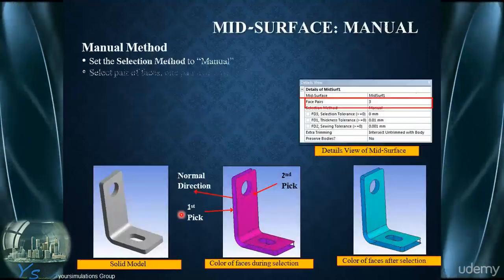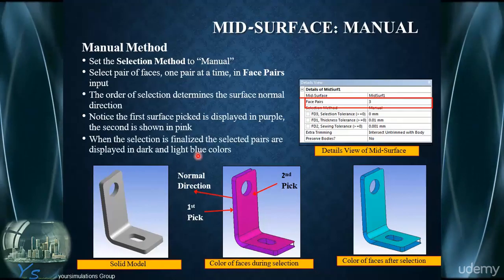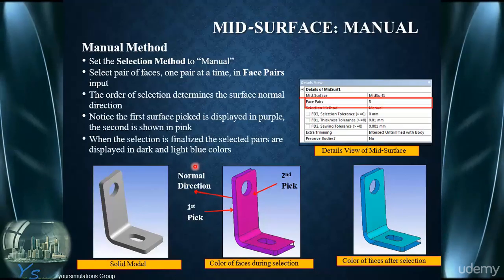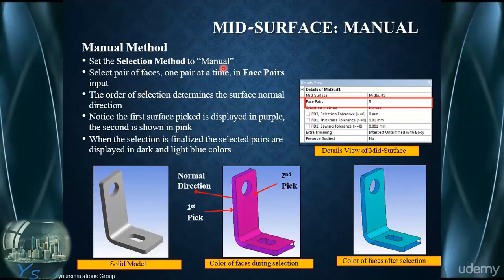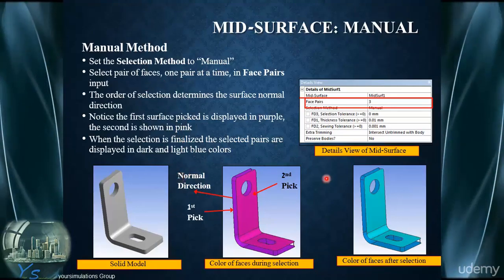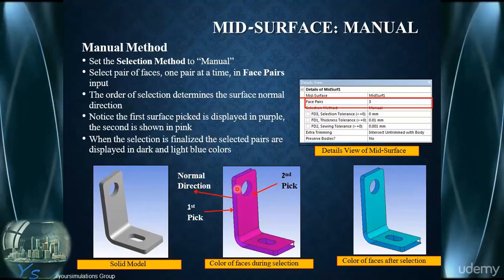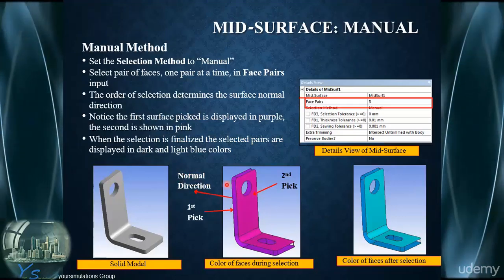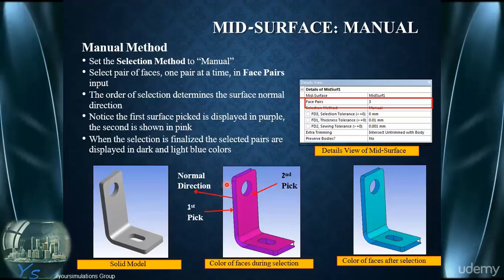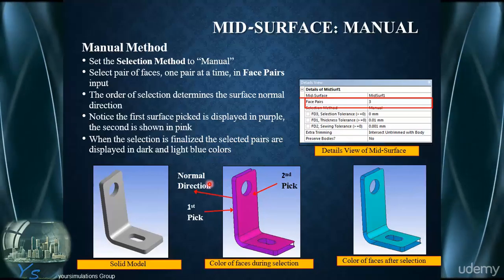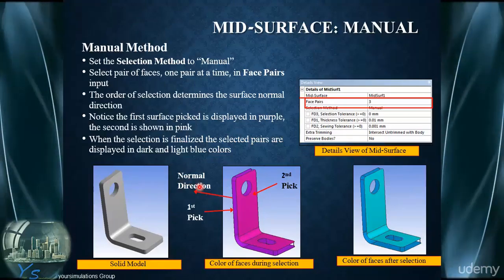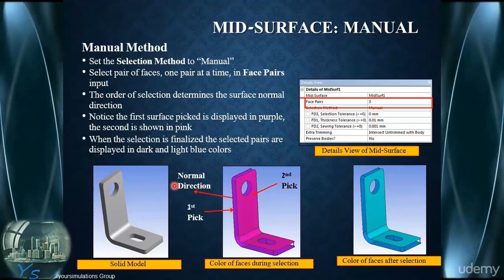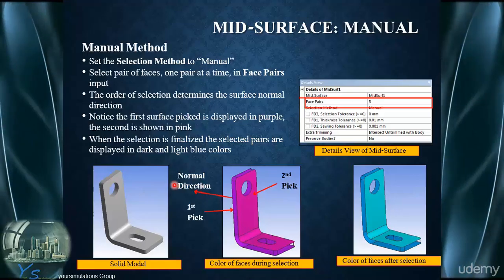Here we can see the manual approach. We select the mid-surfacing option and set the selection method to manual. We then progress through the model selecting the pairs of faces, one pair at a time, to be used for the mid-surfacing definition. The order of selection determines the normal direction, so you have to be careful in terms of the order in which you select the faces for mid-surfacing.